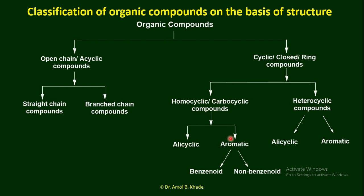Homocyclic compounds can be further divided into two parts: alicyclic and aromatic. The Hückel rule helps guide us in determining whether a structure is aromatic or non-aromatic. Aromatic compounds can be again subdivided into benzenoid compounds and non-benzenoid compounds. Heterocyclic compounds can also be subdivided into alicyclic and aromatic categories.